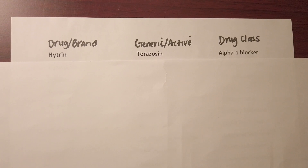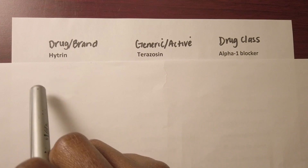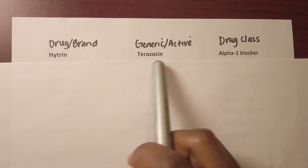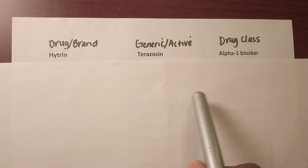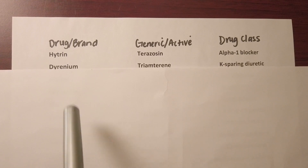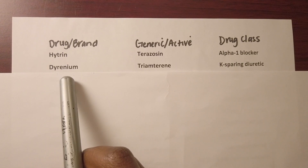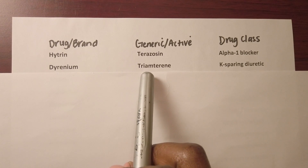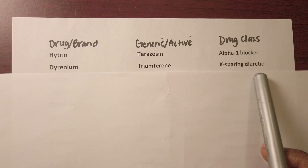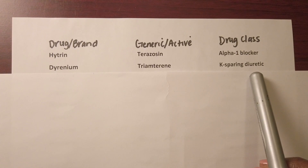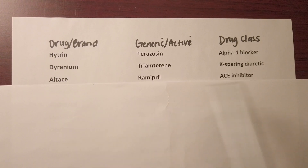We're going to continue with drug name Hytrin, generic name terazosin, and it's an alpha-1 blocker used for high blood pressure. We have Dyrenium, generic name triamterene, and it's a potassium-sparing diuretic — also an antihypertensive for high blood pressure.